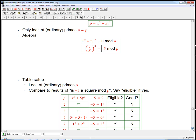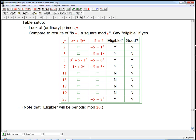Turns out that if we look at is minus 5 a square mod p, that's an easy question to answer. Notice that, let's see.